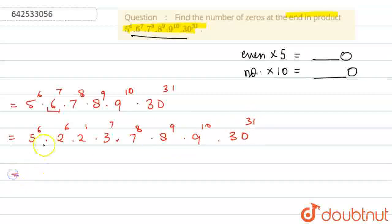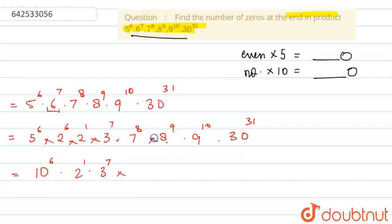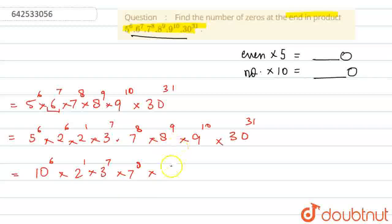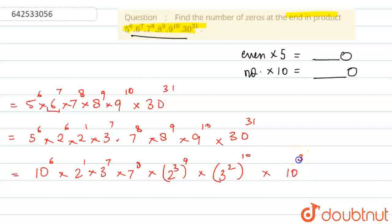Now we can write this as: 5 times 2 is 10, so this becomes 10 to the power 6, into 2 to the power 1, into 3 to the power 7. These are all in multiplication — dot means multiplication. Into 7 to the power 8. Now 8 can be written as 2 to the power 3. And 9 can be written as 3 squared to the power 10. Into 30 — we write this as 10 to the power 31, into 3 to the power 31.